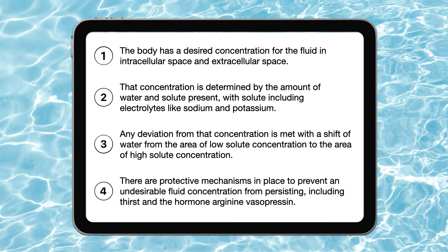Additionally, I showed how the body has a desired concentration for the fluid in the intracellular and extracellular space, how that concentration is determined by the amount of water and solute present — with solute including electrolytes like sodium and potassium — how any deviation is met with a shift of water from low to high solute concentration, and how protective mechanisms like thirst and arginine vasopressin, also known as antidiuretic hormone, prevent undesirable fluid concentrations from persisting.